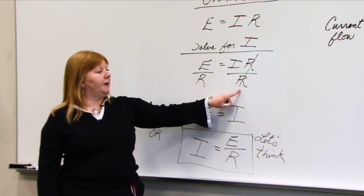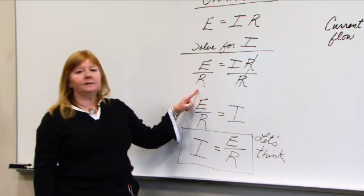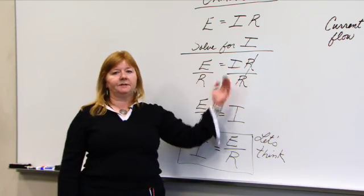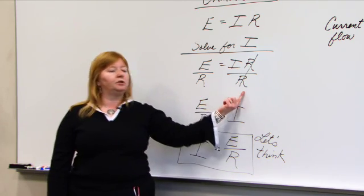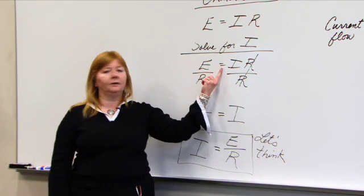If I divide both sides by resistance, what it does is it cancels from this side and shifts the relationship to the left side of the formula. As long as we do it to both sides, we're okay. We keep the equality intact.